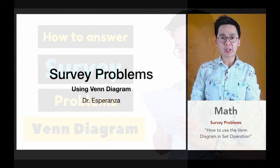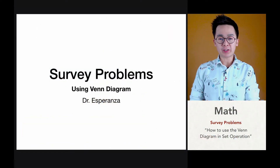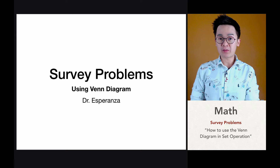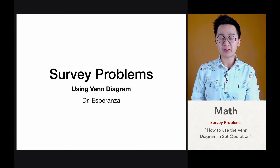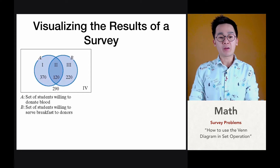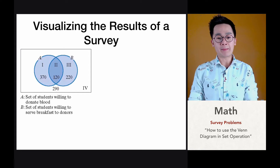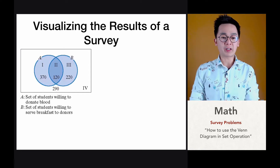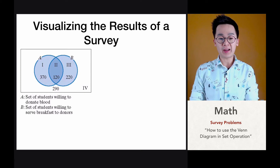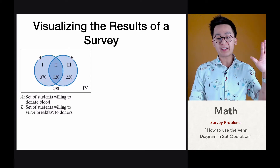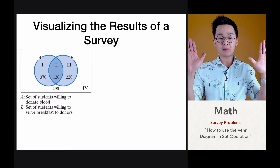Today, we're going to be working on the applications of some survey notations and operations involving subsets using the Venn diagram. In this particular example, we're going to be working on a survey wherein there are two subsets, which is subset A and subset B.